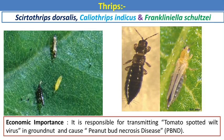Thrips are thysanopteran insects having incomplete metamorphosis with three life stages: egg, nymphs, and adult. The damaging stages are both nymphs and adult. The economic importance of this pest is that in case of groundnut, it is responsible for transmitting the tomato spotted wilt virus, which causes peanut bud necrosis disease in groundnut.